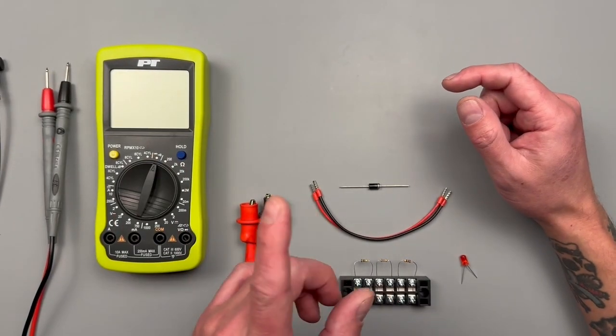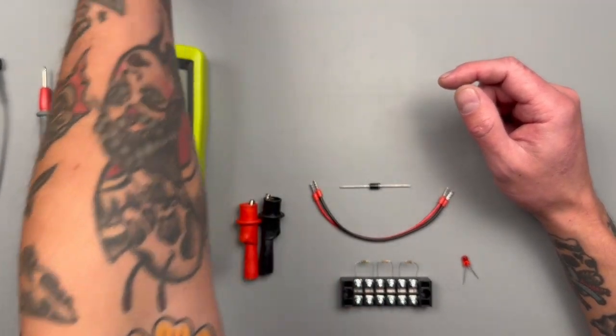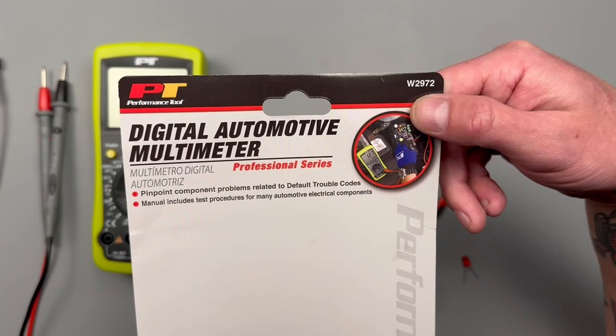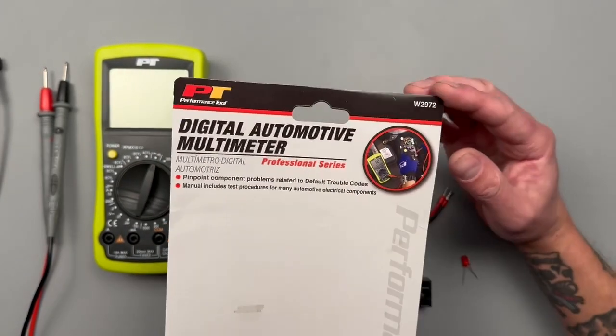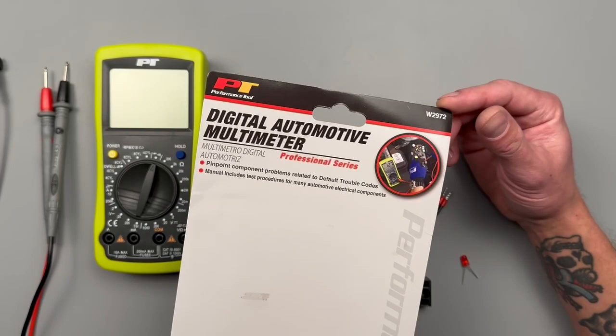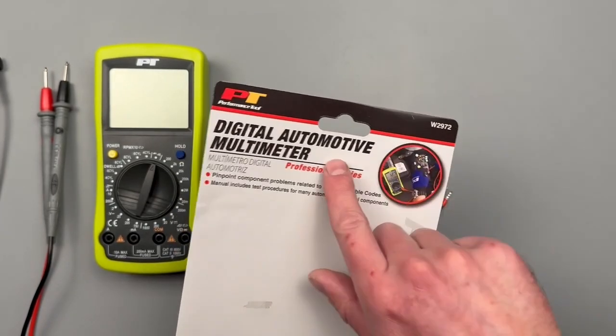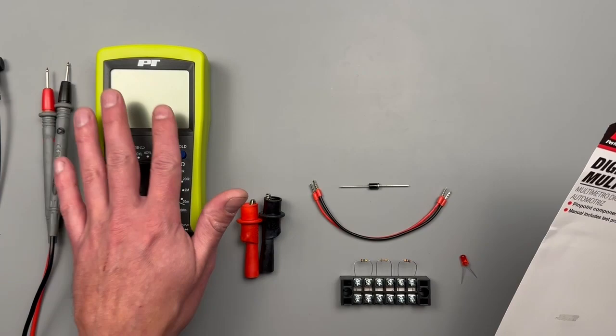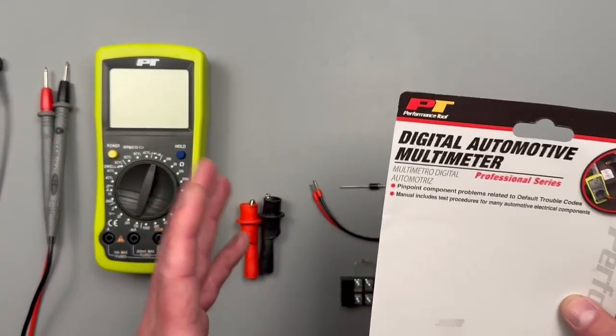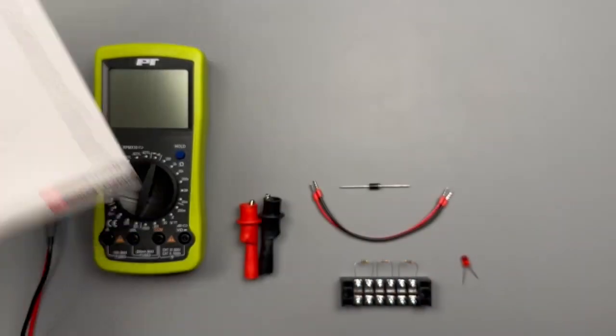All right folks, welcome back to another adventure in the garage. Today we're going to be going over the W2972 Performance Tool Digital Automotive Multimeter. This is the first multimeter I've seen that's advertised as automotive and actually has automotive specific settings that I haven't seen on any other meters. So I thought that was pretty cool.